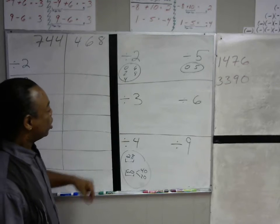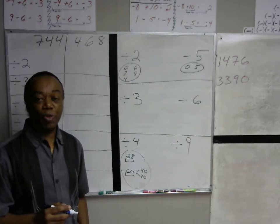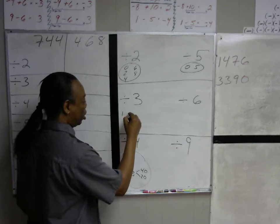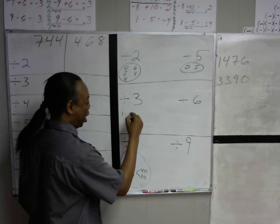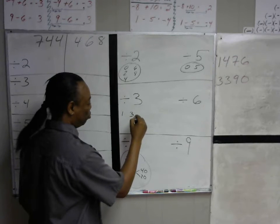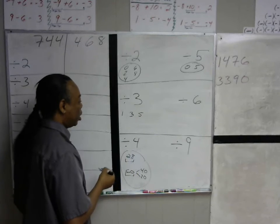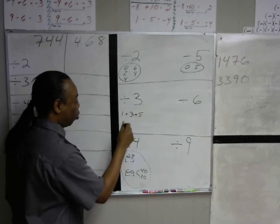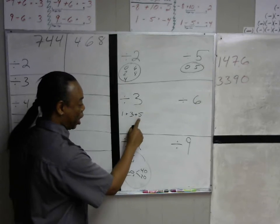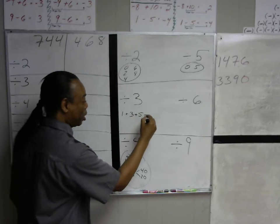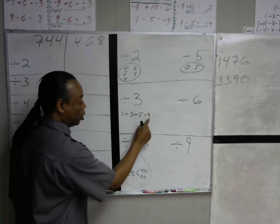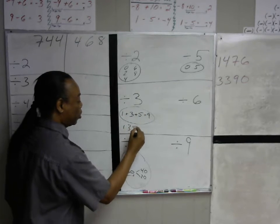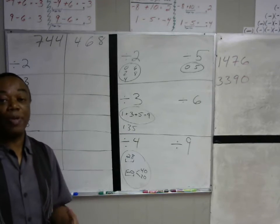A number is divisible by 3 if you take all the individual digits and add them up. So if you see 135, you add the individual digits: 1 plus 3 is 4, and 4 plus 5 is 9. When you add these up individually you get 9, and if this sum is in the three times tables, then the original number 135 can be divided by 3.